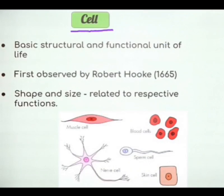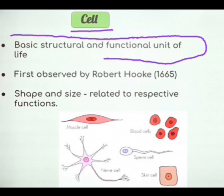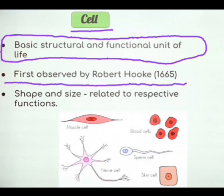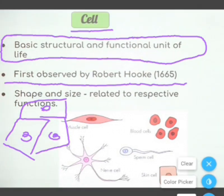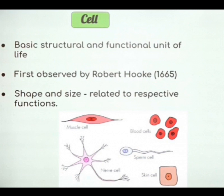We are going to learn about cells. As we know, the cell is the basic structural and functional unit of life. It was first observed by Robert Hooke in 1665. Robert Hooke actually observed a dead cell. He called it a cell because it looked like honeycombs, and also like a prison cell in which prisoners stay. Based on that he gave the name 'cell'. Shape and size are related to the respective functions of the cell.